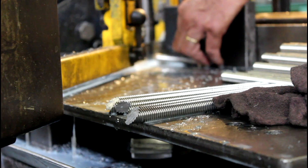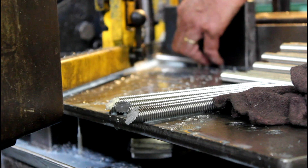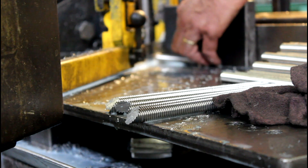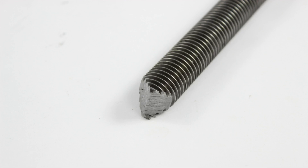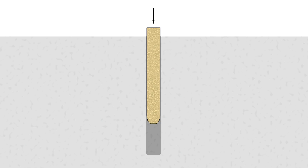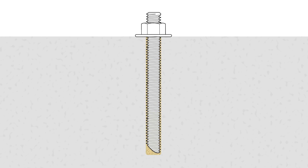Other common end types for all-thread rods include angle cut and chisel point. These two end types are used for adhesive anchors, where the special ends break epoxy capsules and facilitate proper mixture of the adhesive in the concrete.